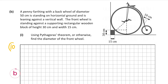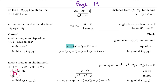B part one is worth 10 marks and asks us to find the diameter of the front wheel using Pythagoras's theorem or otherwise. We're going to use the general equation of a circle from page 19 of the formula and tables book: x minus h, squared, plus y minus k, squared, equals r squared, where the center is (h, k) and the radius is r.